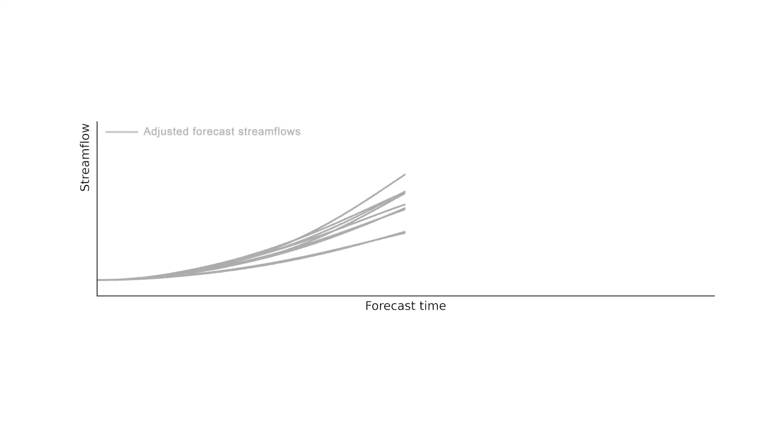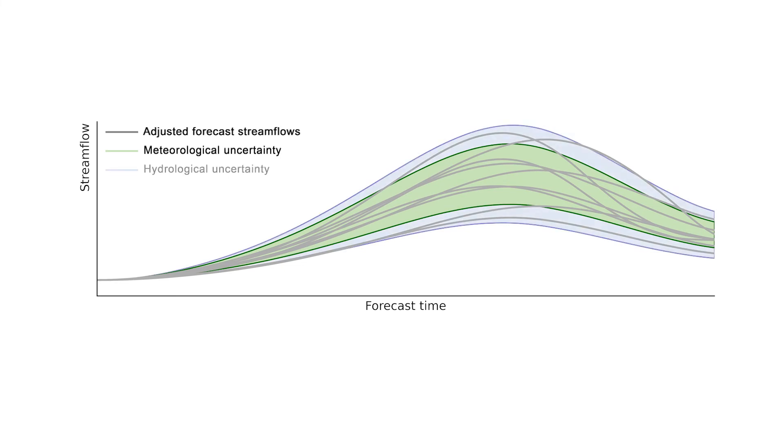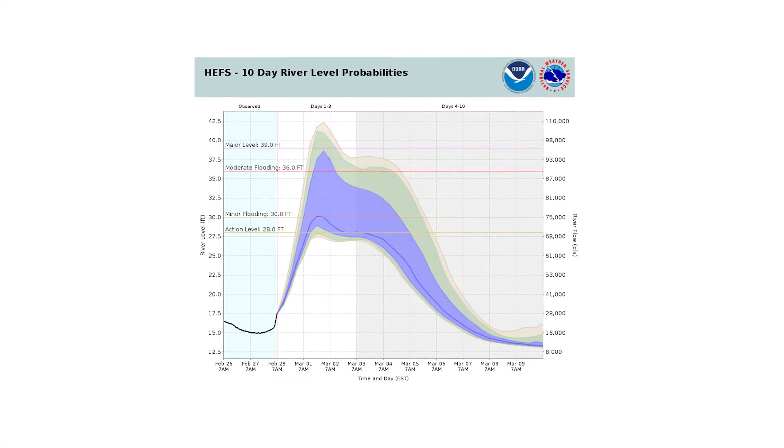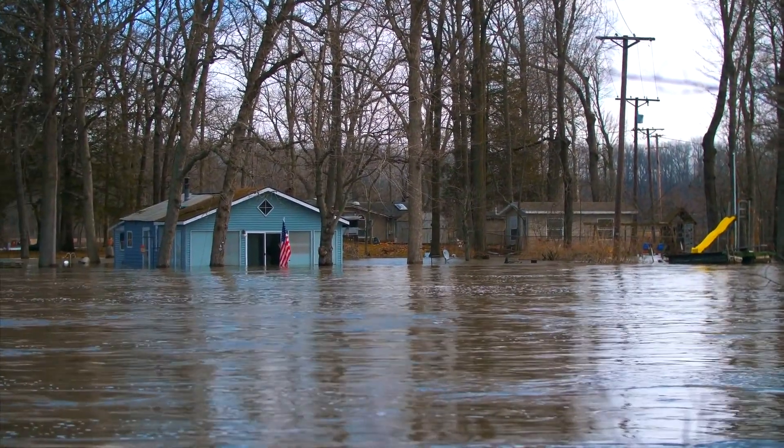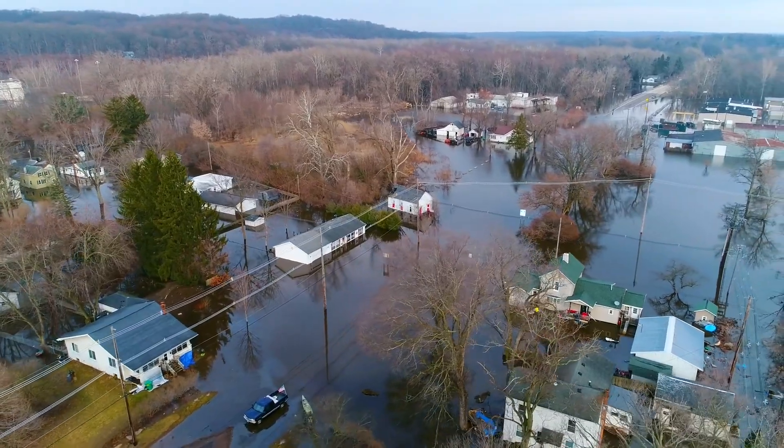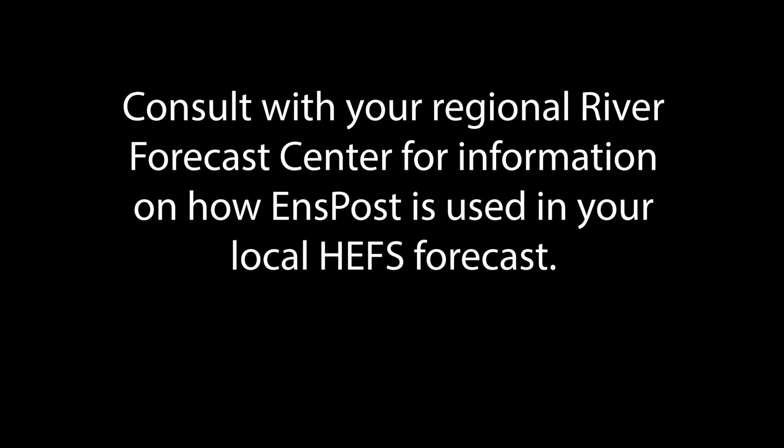The end product is an ensemble of adjusted streamflow forecasts that are less biased and properly account for the uncertainties in the hydrological modeling. By adjusting an ensemble streamflow forecast to account for past hydrological prediction quality, ONSPOST helps HEFS provide a more reliable streamflow forecast to support impact-based decision making. Implementation of ONSPOST currently varies by location, so consult with your regional river forecast center for information on if and how it is used in your local HEFS forecast.